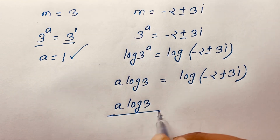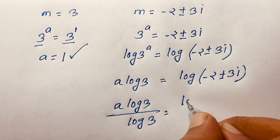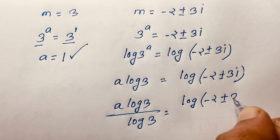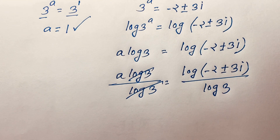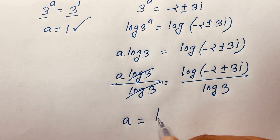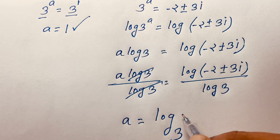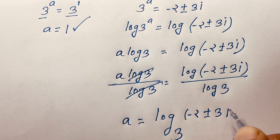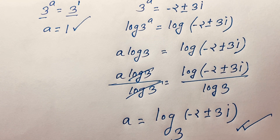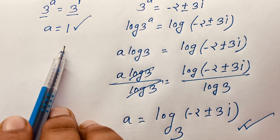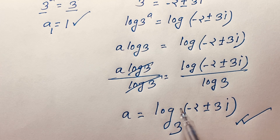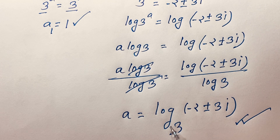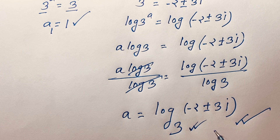Dividing both sides by log 3, the log 3 terms cancel, giving a equals log base 3 of (negative 2 plus or minus 3i). So our final answers are: a equals 1 (the real solution), and a equals log base 3 of (negative 2 plus or minus 3i) as the complex solution. Thank you all — if you enjoyed this video, please subscribe for more interesting videos. Goodbye, take care!